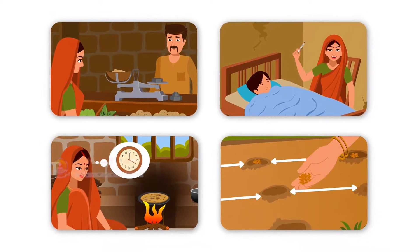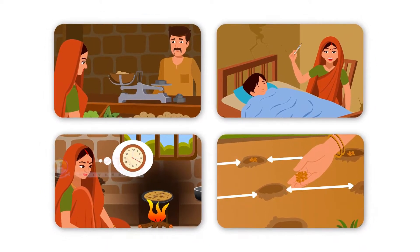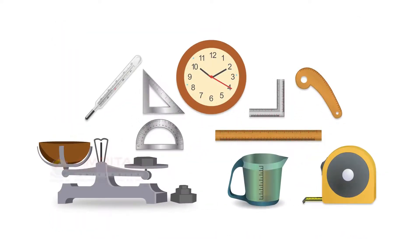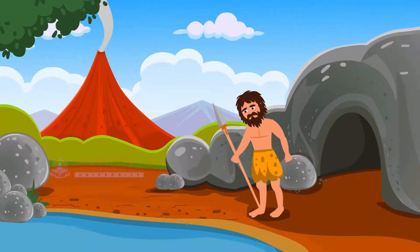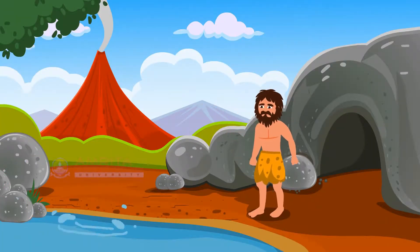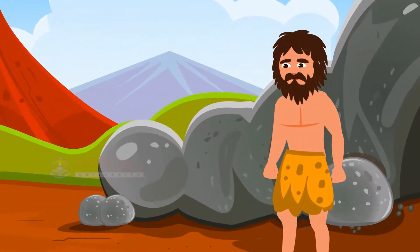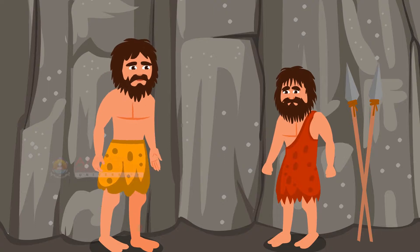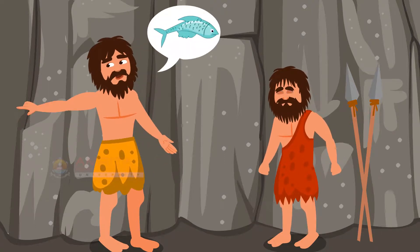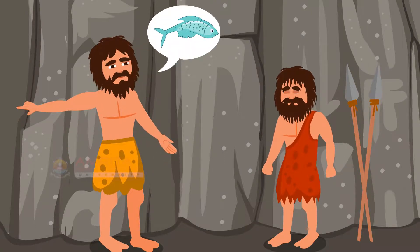However, it is also very essential to use certain standard units of measurement to ensure consistency and accuracy. Today, there are many kinds of measuring tools available in the market. But do you know how man measured things in the olden days? How could he describe the size of things that he had seen? He would have to compare it with something familiar to everyone. When man needed to talk about things, he compared them to the handiest things he could find, which were his body parts.